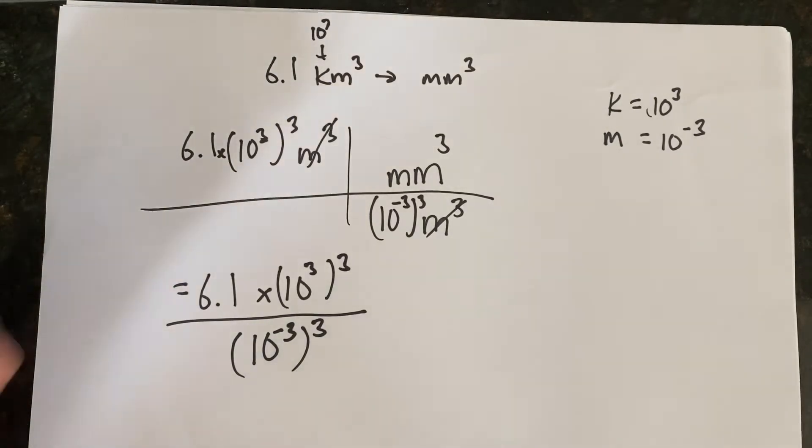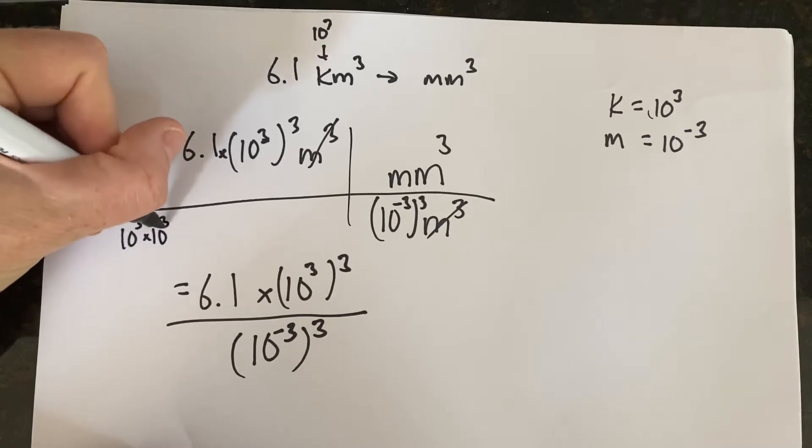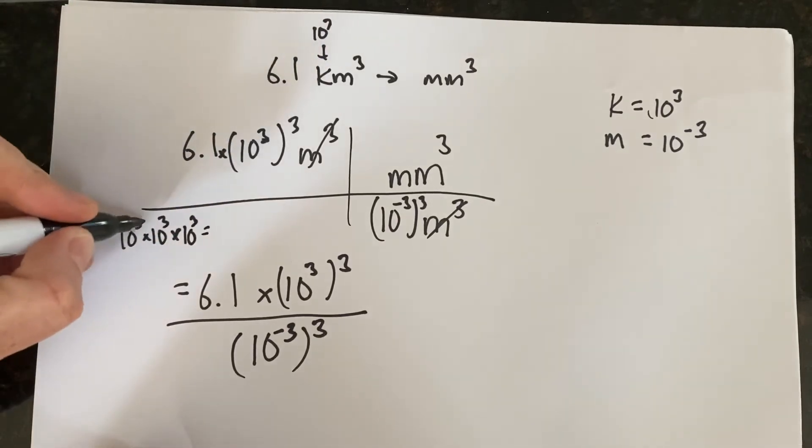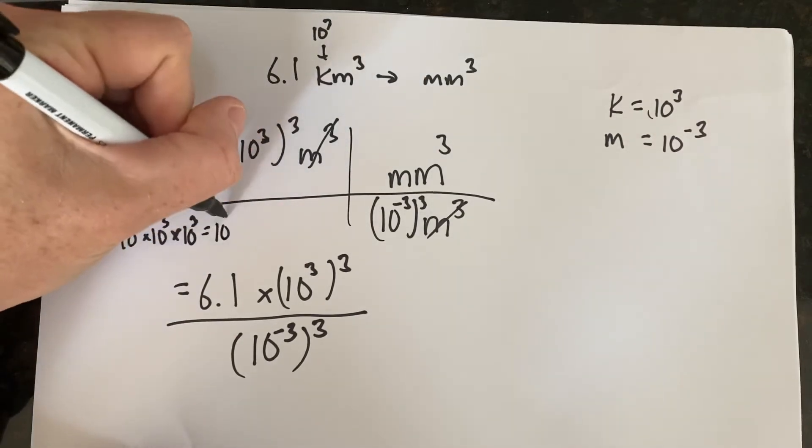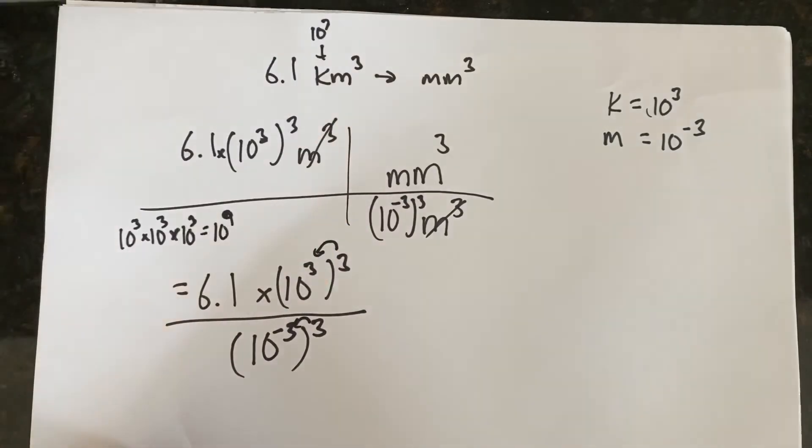Okay, so there's a few different ways you can think about this. 10 to the third cubed is 10 to the third times 10 to the third times 10 to the third. And that would be 10 to the 3 plus 3 plus 3, or 10 to the 9. Another really quick way to do it is just multiply this times that, and that will give you the appropriate exponent.